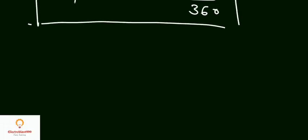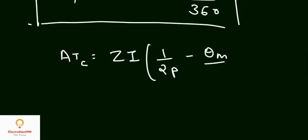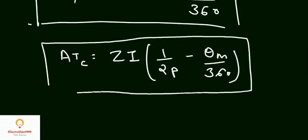And cross magnetizing ampere turns is given by ZI multiplied by 1 over 2P minus theta M divided by 360, where P is the number of poles. So by this we can calculate the number of demagnetizing and cross magnetizing turns per pole.